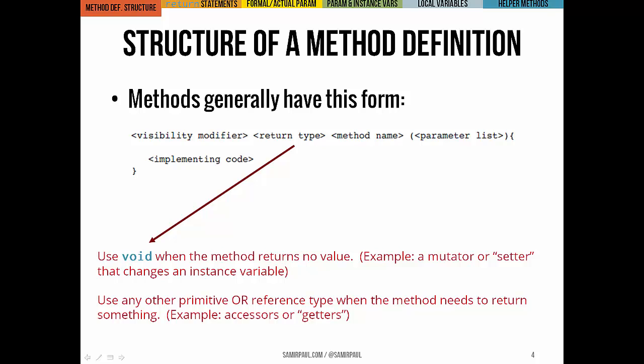But if a method's return type isn't void, then we can set the return type to any primitive or reference type or anything. One of the most common types of methods that we'll see that has a return value are accessors or getters, which are methods that just return the value of one of the instance variables of an object.